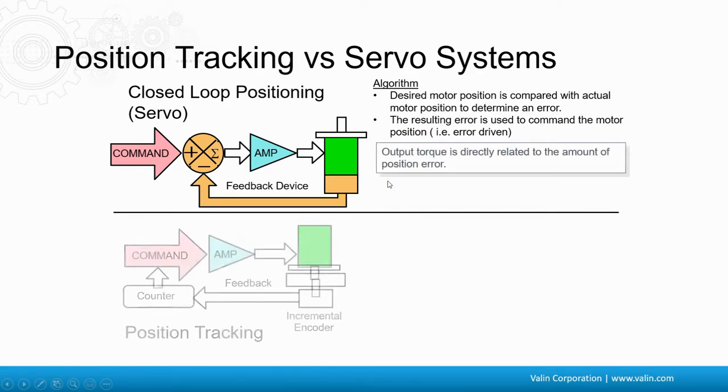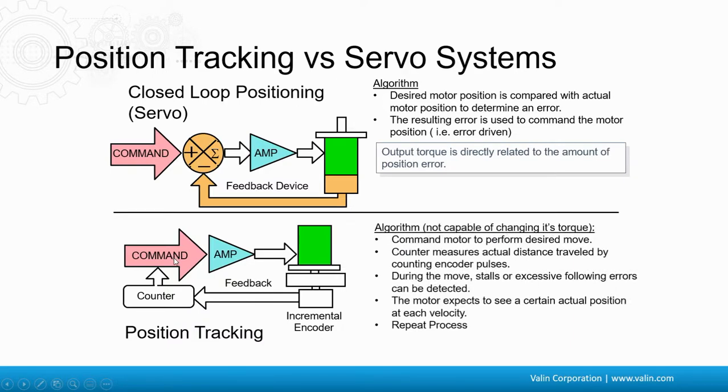Okay. A position tracking system, however, the feedback goes back to some counter. And then it goes to the command. And later on in the move, it might make an adjustment. So, you command the motor to perform a desired move. The counter measures the actual distance traveled by counting the encoder pulses. During the move, the stalls or excessive following errors can be detected. The motor expects to see a certain actual position at each velocity. It makes an adjustment. It's much slower. It's done at the end of the move, typically.